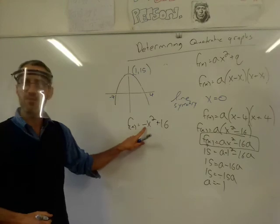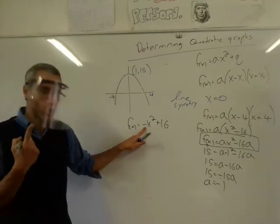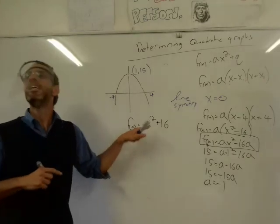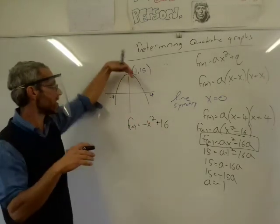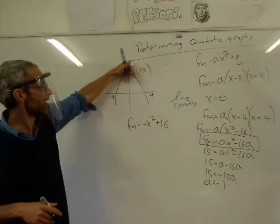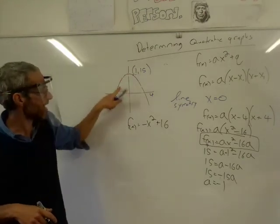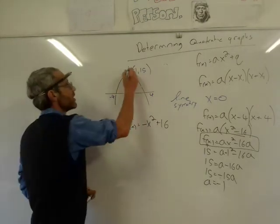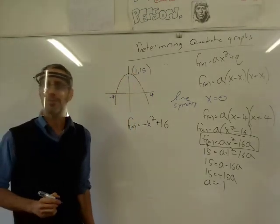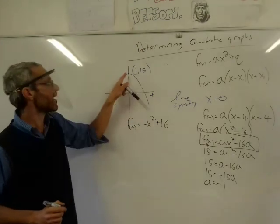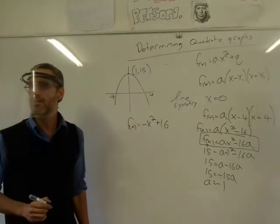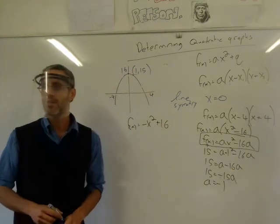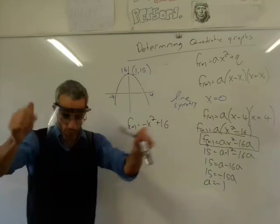Why did I get a negative sign? Why is it a good thing that I got this? You can tell from the graph — it's a sad face, an upside-down parabola — so you know a must be negative. And what is the y-intercept? You can tell me straight away: it's 16, because f(x) = −x² + 16, so the y-intercept is plus 16. Excellent — let's do some work.